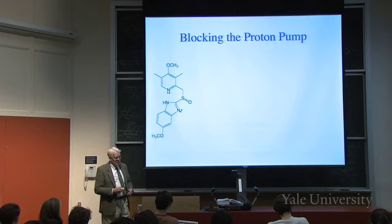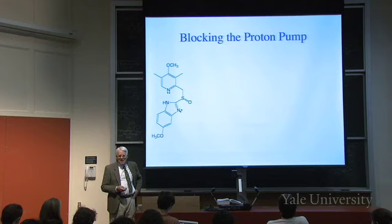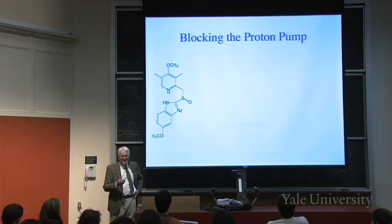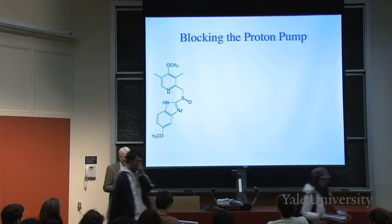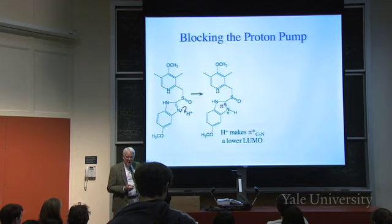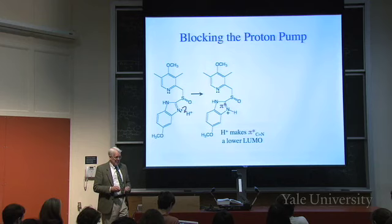We mentioned omeprazole last time. Here's the chemical structure of omeprazole. What will make it reactive? It's got lone pairs on two nitrogens. Now one way to discriminate between them is to protonate one of them, because when you do that, you now have a carbon-nitrogen double bond, and the π-star will be unusually low because of the positive charge that came from the proton.